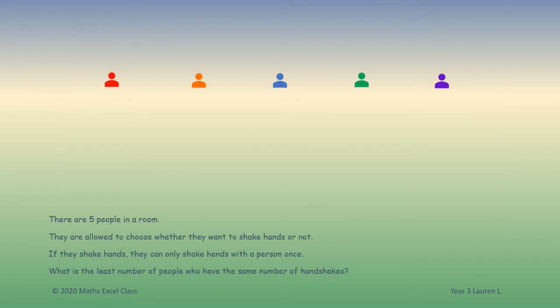All of the five people can only do zero, one, two, three, or four handshakes. None of them can do five handshakes because there are only five people and nobody can handshake themselves.